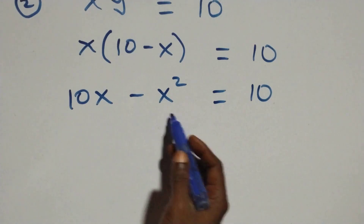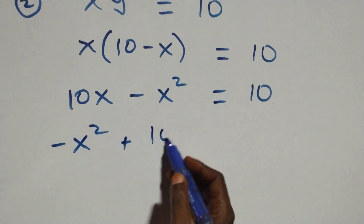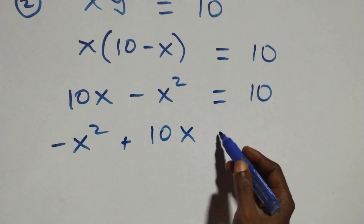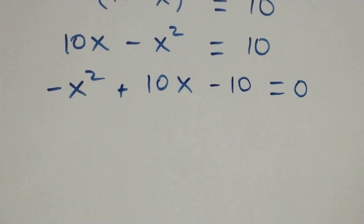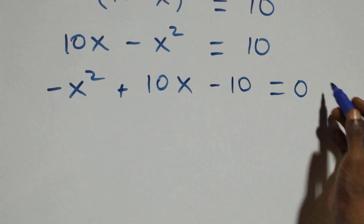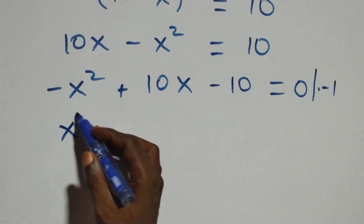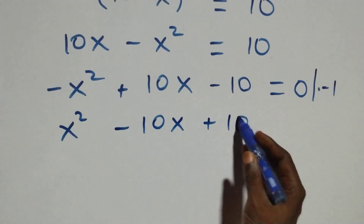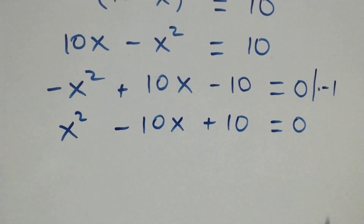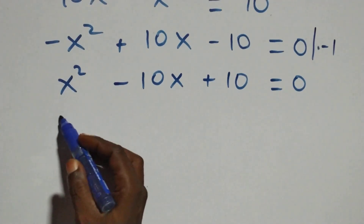The next step we rearrange and we have minus x squared plus 10x, also taking 10 to this side it becomes minus 10, then equals to 0. Here we have a quadratic equation.